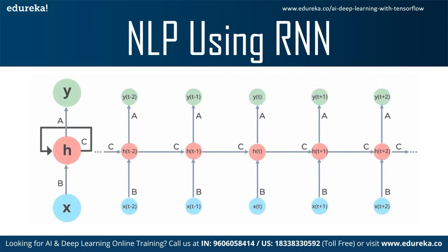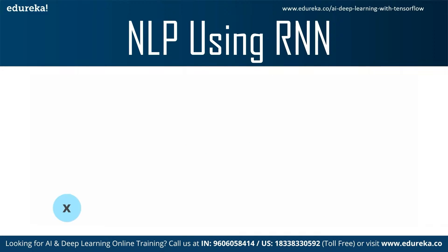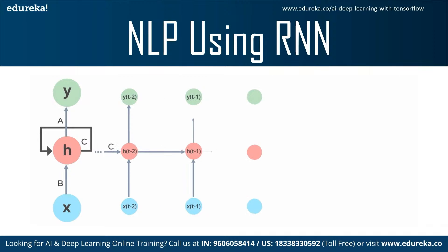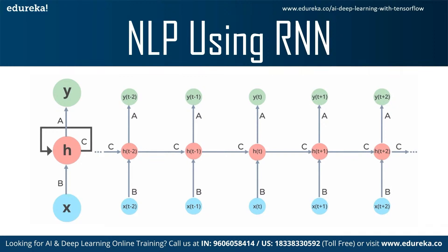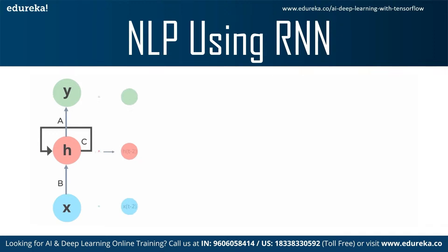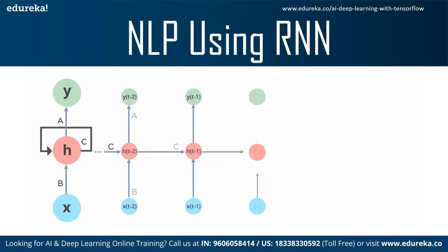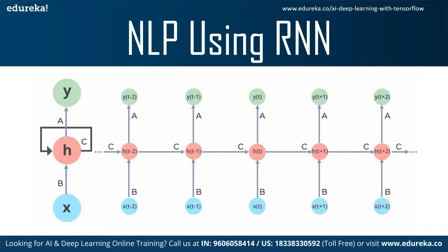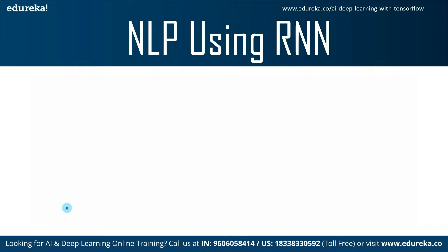RNN stands for Recurrent Neural Network, and we use it to deal with sequential data. Sequential data can be something like time series data or textual data of any format. RNNs have an internal memory, allowing them to remember important things about the input received, making them very precise in predicting the next outcome. Examples of sequential data include time series, speech, text, financial data, audio, video, weather, and many more.